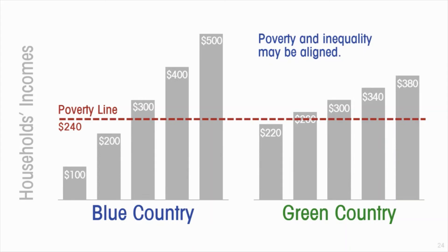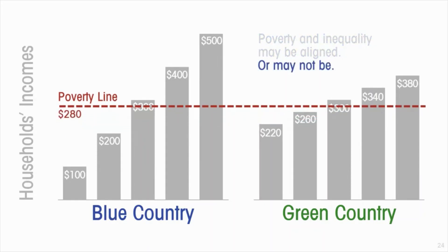Poverty and inequality are sometimes aligned. With that poverty line, we see that the more unequal country — the blue country — has a higher poverty rate: 40 percent of its households are poor, compared to only 20 percent in the more equal green country. But if we had instead picked a poverty line of two hundred and eighty dollars, then both countries would have the same poverty rate — 40 percent of households below the poverty line — even though one is clearly more unequal than the other. So sometimes the two are aligned and sometimes not.